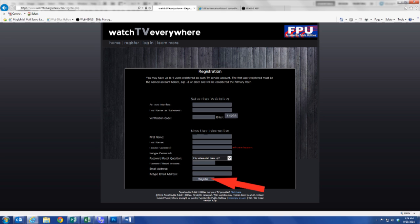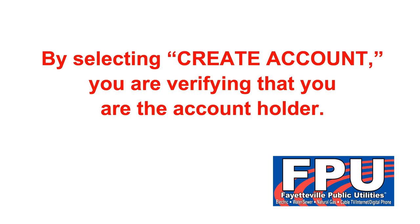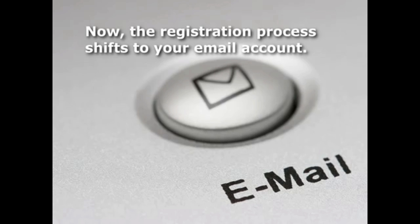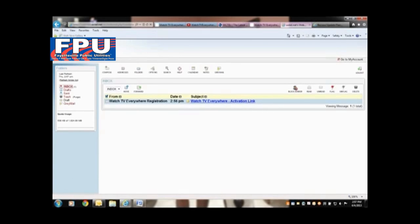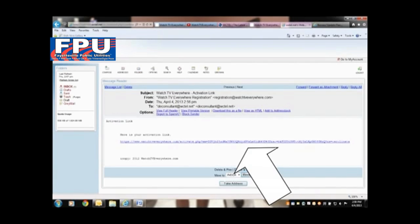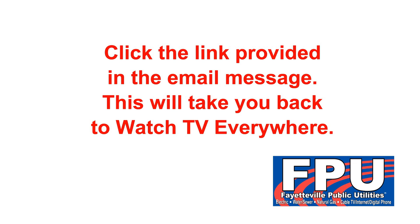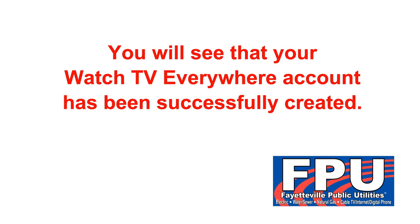A message will appear noting the email address you have entered. By selecting Create Account, you are verifying that you are the account holder. The registration process then shifts to the email account. An email message is created and sent to the inbox of the email address you entered during registration. You should receive this email almost immediately. Check the link provided in the email message — this will take you back to Watch TV Everywhere.